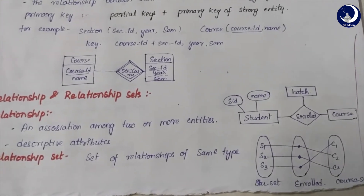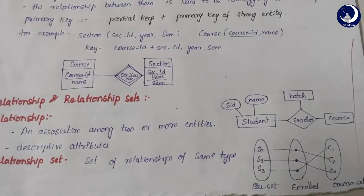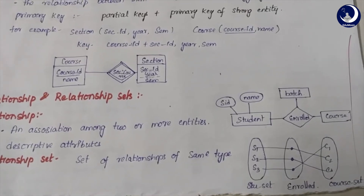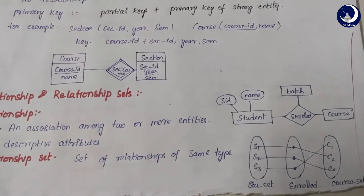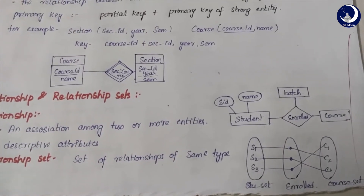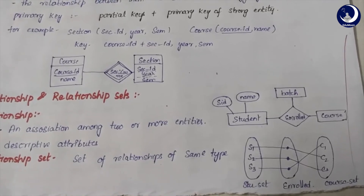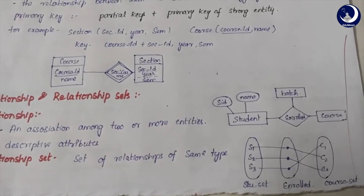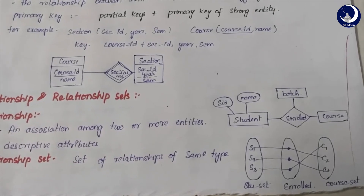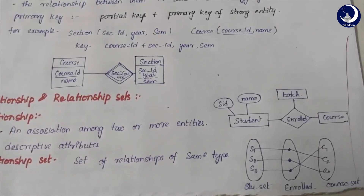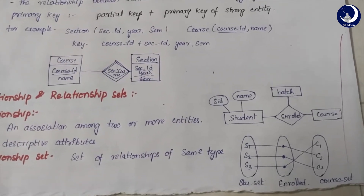A relationship set is a set of relationships of the same type. For example, it is a relationship between two different entity sets — a student entity set and a course entity set — with the relationship 'enrolled'. Student S1 is enrolled in course C2, student S2 is enrolled in course C3, and S3 is enrolled in C1. This is how a relationship set is represented.